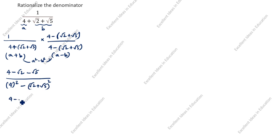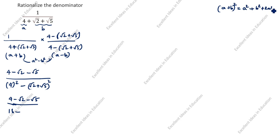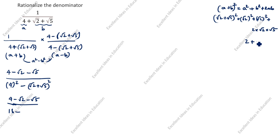So we have 4 minus root 2 minus root 5 divided by 16 minus root 2 plus root 5 the whole square. Now we apply the A plus B whole square formula: A square plus B square plus 2AB. Here A is root 2 and B is root 5, so root 2 square is 2, root 5 square is 5, and 2 into root 2 into root 5 is 2 root 10. So 2 plus 5 is 7 plus 2 root 10. The denominator becomes 16 minus 7 plus 2 root 10, which is 9 minus 2 root 10.